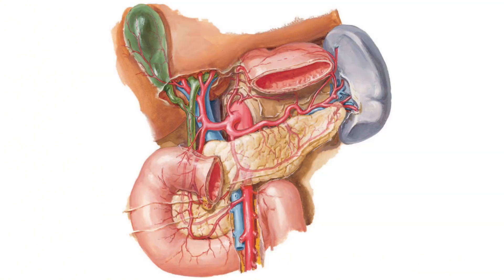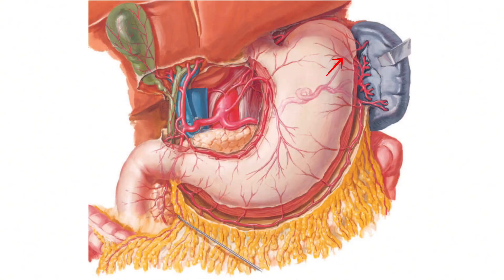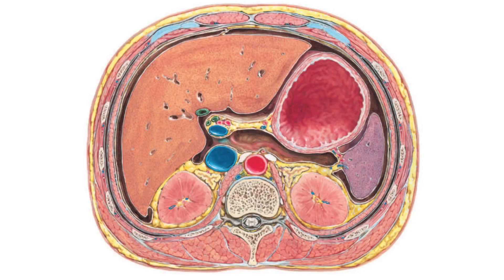The branches of the splenic artery are: dorsal pancreatic artery, greater pancreatic artery, other small pancreatic arteries, short gastric arteries, left gastro-omental or gastroepiploic artery, and terminal branches which enter the hilum of the spleen. The short gastric arteries and the left gastro-omental or gastroepiploic artery both pass through the gastrosplenic ligament.